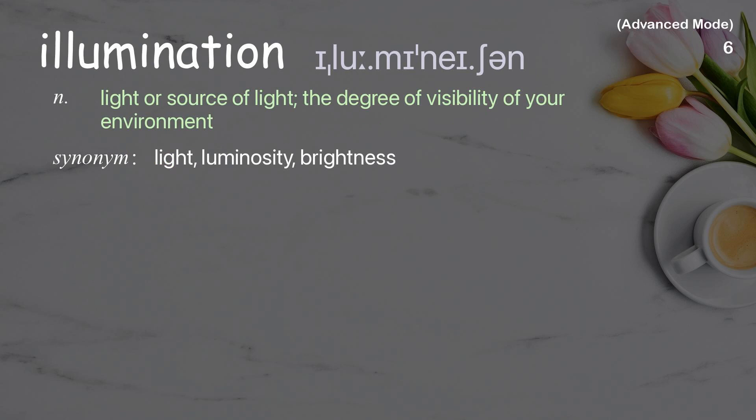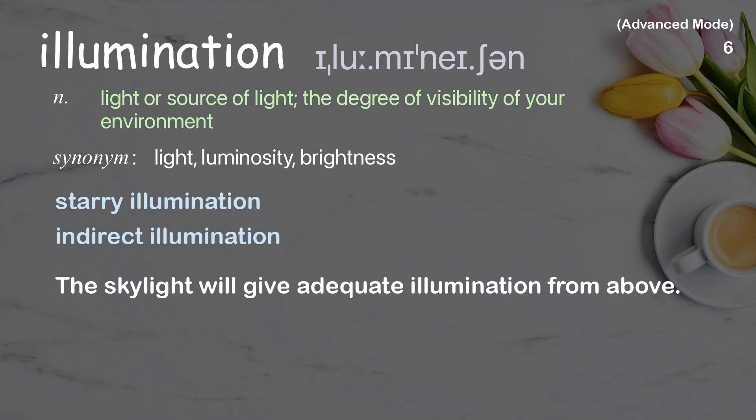Illumination: light or source of light — the degree of visibility of your environment. Examples: Starry illumination, Indirect illumination. The skylight will give adequate illumination from above.